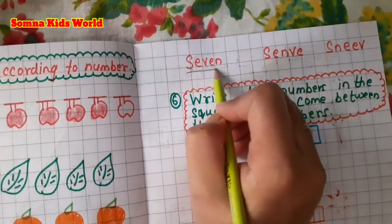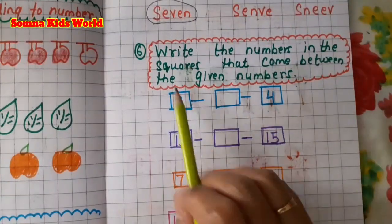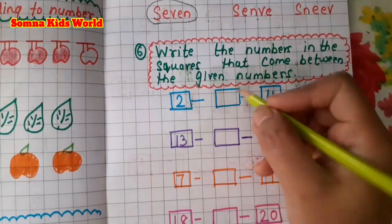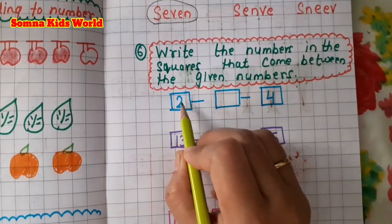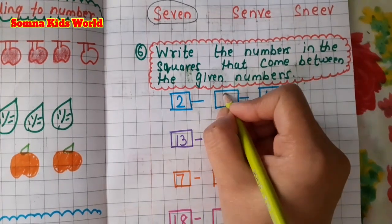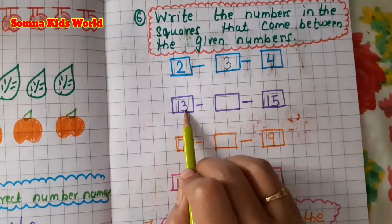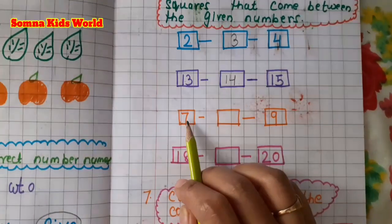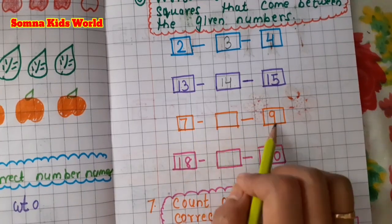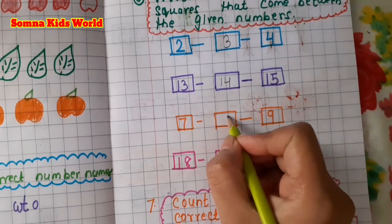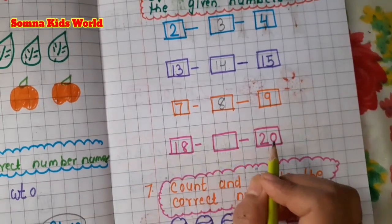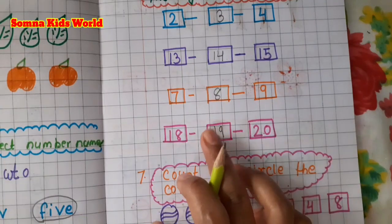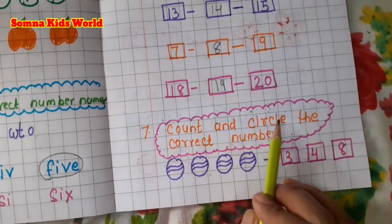Next is: write the numbers in the squares that come between the given numbers. Kids write the between numbers. What comes between 2 and 4? It's 3. What comes between 13 and 15? It's 14. What comes between 7 and 9? It's 8. What comes between 18 and 20? It's 19.